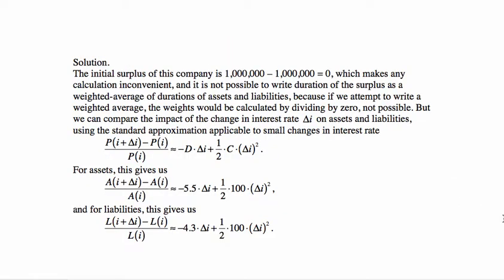So we have those five answers, and we're trying to understand which of them to pick. Let us start by noting that the initial surplus of this company is zero. That makes any kind of regular calculation that we could do inconvenient, because it's not possible to write duration of the surplus as a weighted average of durations of assets and liabilities, because when you try to calculate the weights, you would be dividing by zero, and you can't do that.